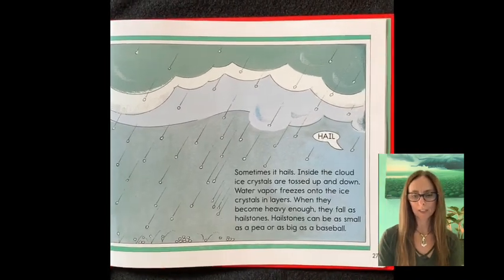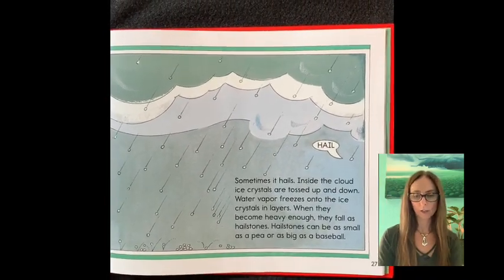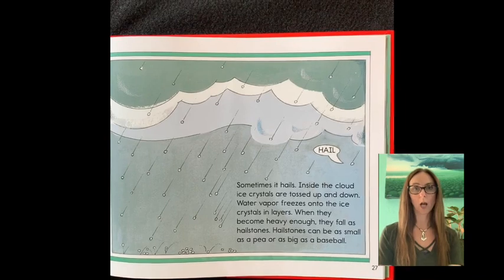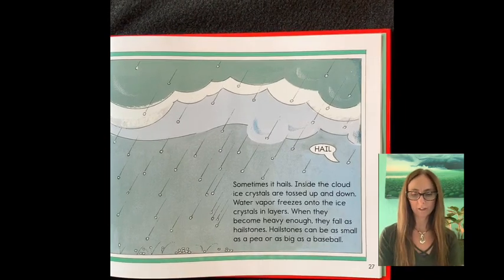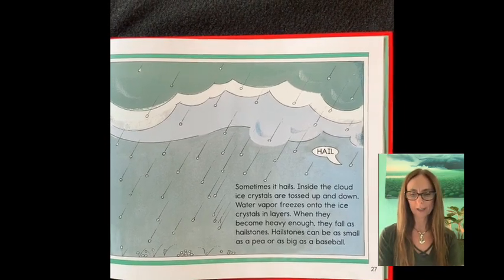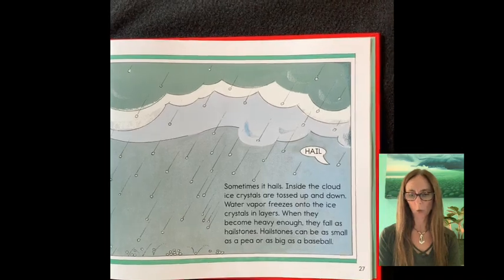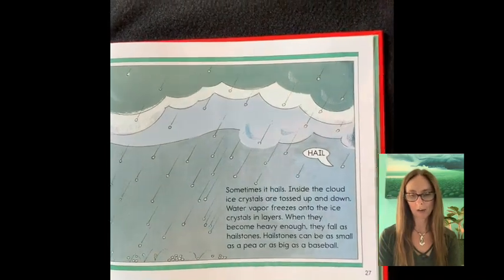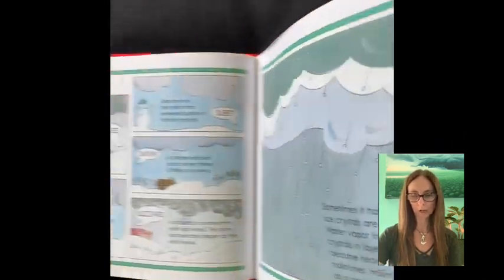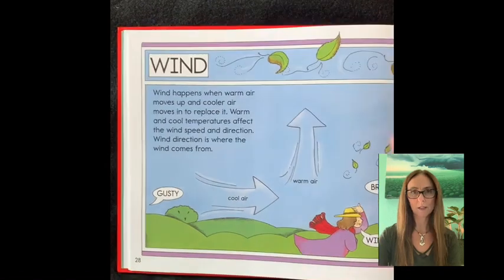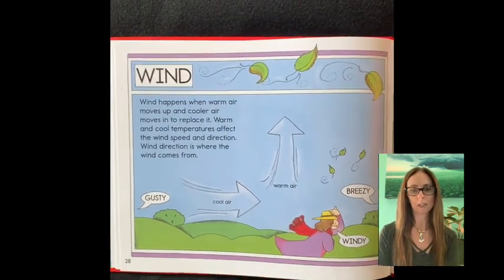Sometimes it hails. Inside the cloud ice crystals are tossed up and down. Water vapor freezes onto the ice crystals in layers. When they become heavy enough they fall as hailstones. Hailstones can be as small as a pea or as big as a baseball.